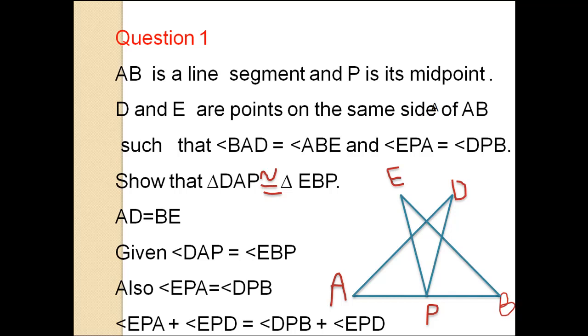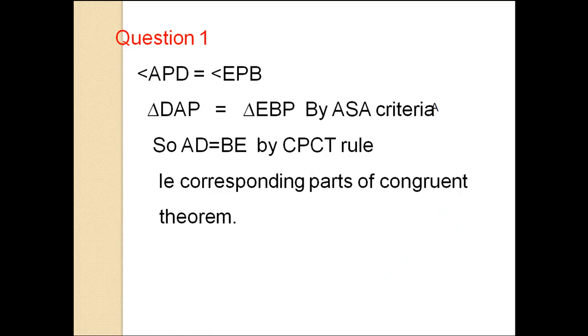Given AD equals BE and angle DAP equals angle EBP. Also angle EPA equals angle DPB. So angle EPA plus angle EPD equals angle DPB plus angle EPD. Therefore angle APD equals angle EPB.